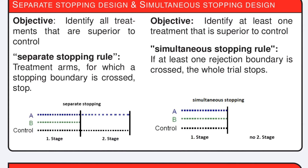The objective determines the stopping rule. If all superior treatments are to be identified, the separate stopping rule is used, where only treatment arms for which a stopping boundary is crossed stop at interim. If at least one superior treatment is to be identified, we use the simultaneous stopping rule, where the whole trial stops if at least one rejection boundary is crossed at interim.